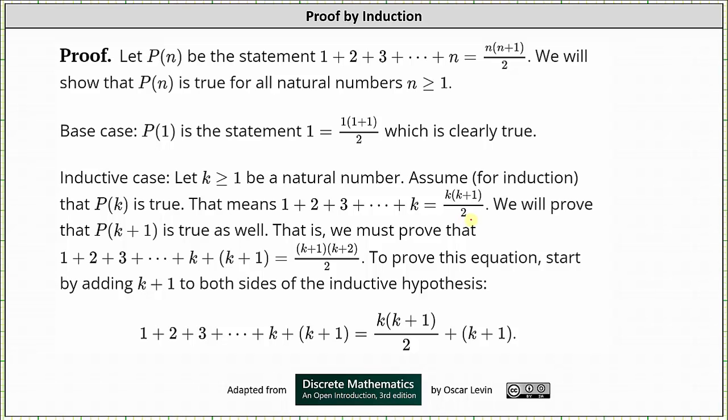We will prove that P(k+1) is also true. That is, we will prove that 1 + 2 + 3 + ... + k + (k+1) = (k+1)(k+2)/2. If you're wondering where this formula came from on the right, if we go back to the statement given by P(k), we replace k with k+1. So this k becomes k+1, and this k+1 becomes k+2.